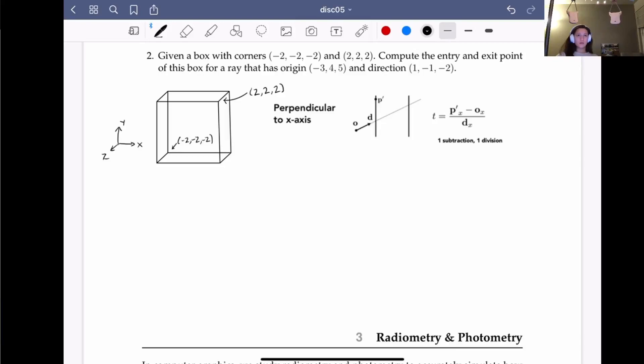Alright, so on to number 2. We are given this box here, and we want to compute the entry and exit point, so entry and exit t value of this box for a ray with origin negative 3, 4, 5, and direction 1, negative 1, negative 2.